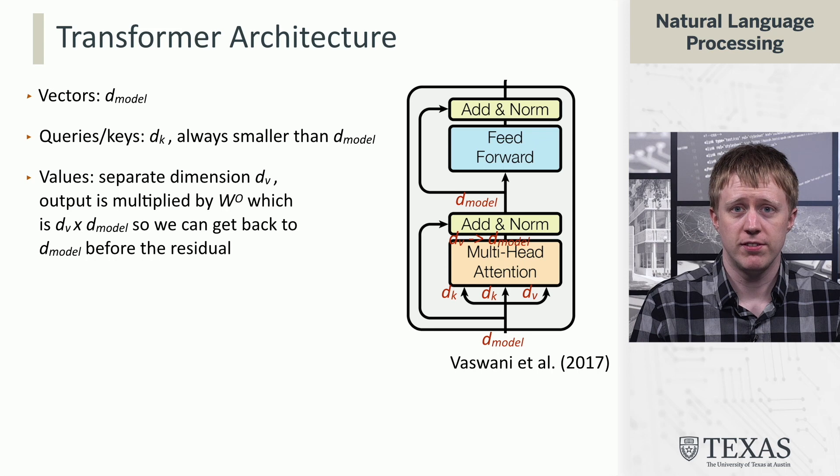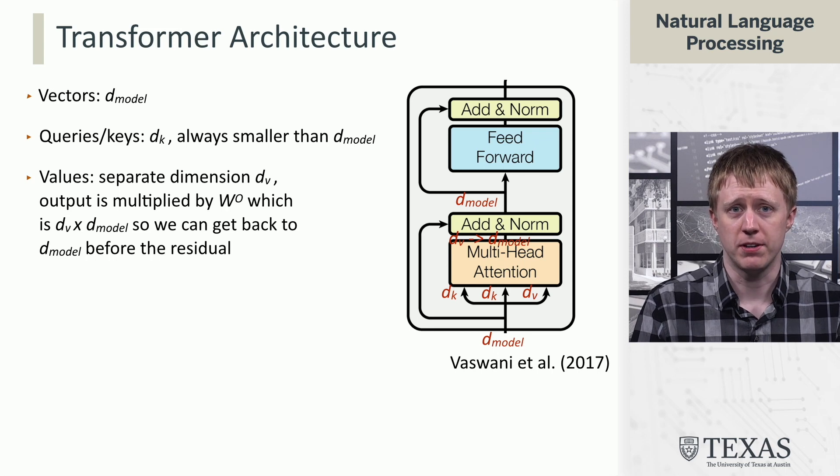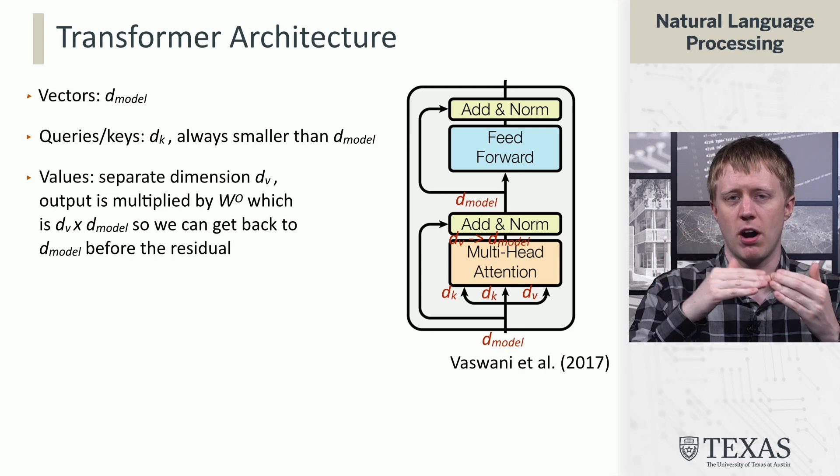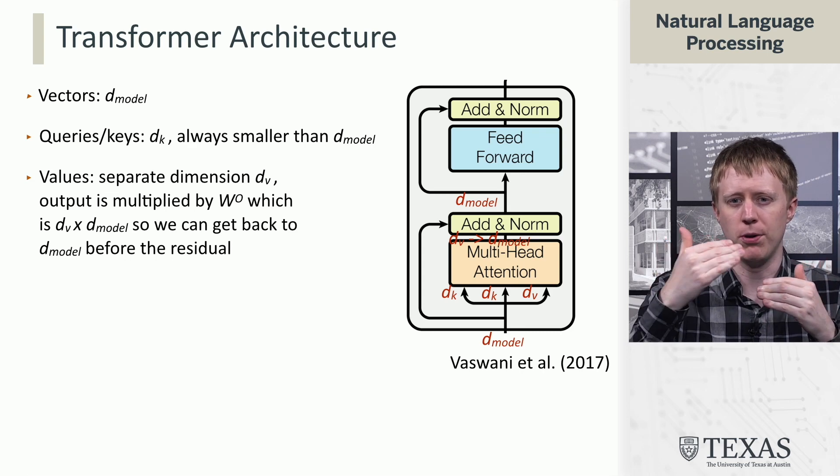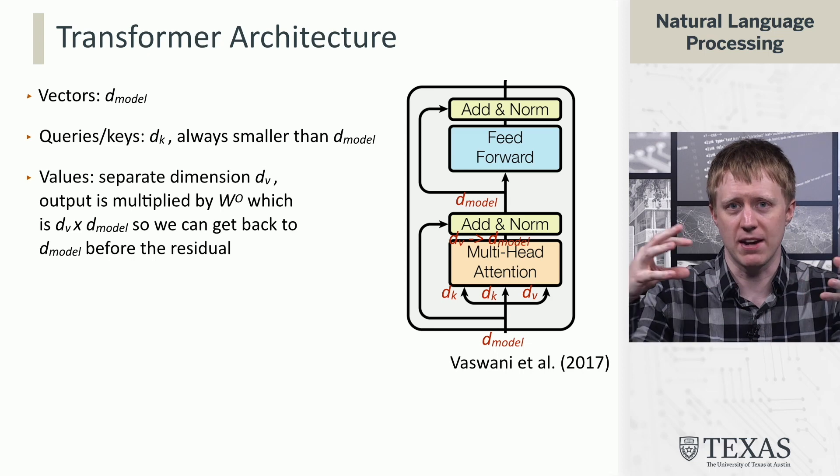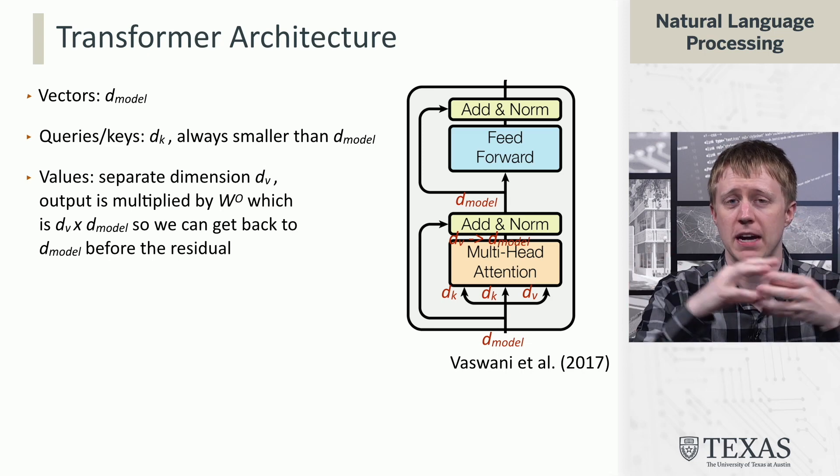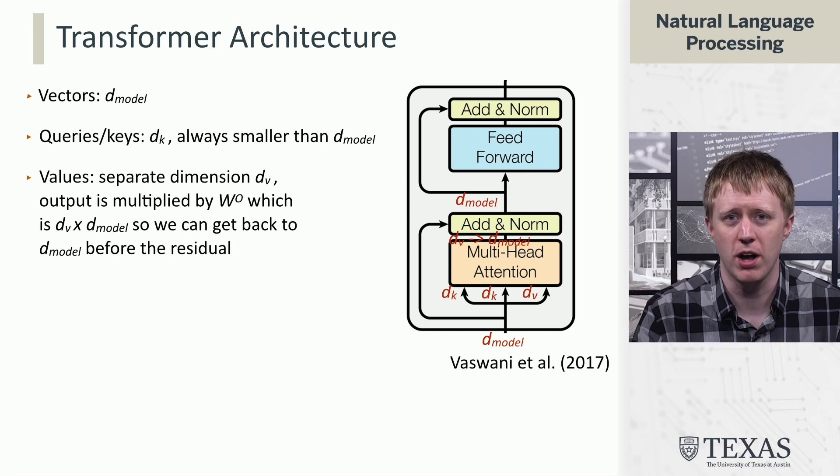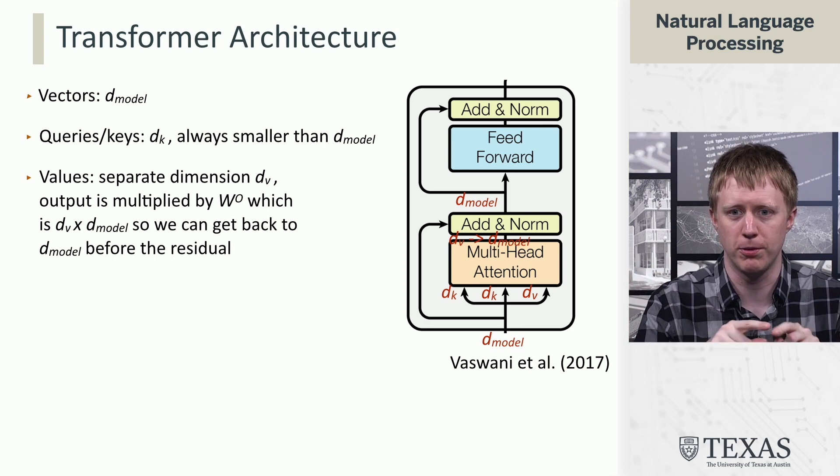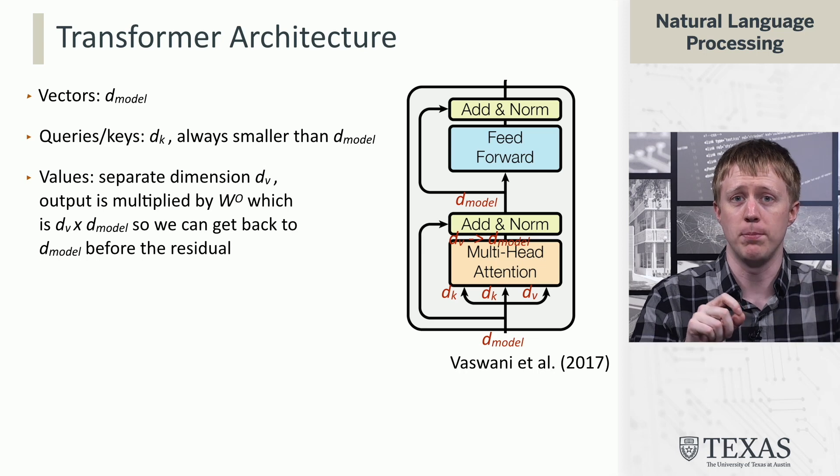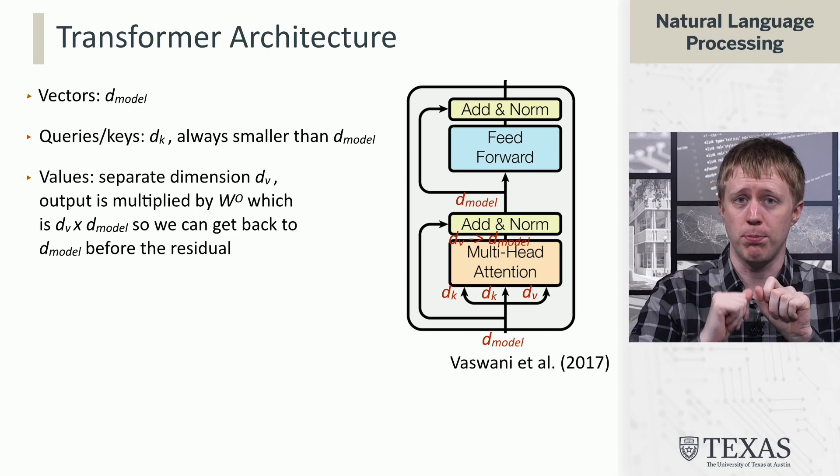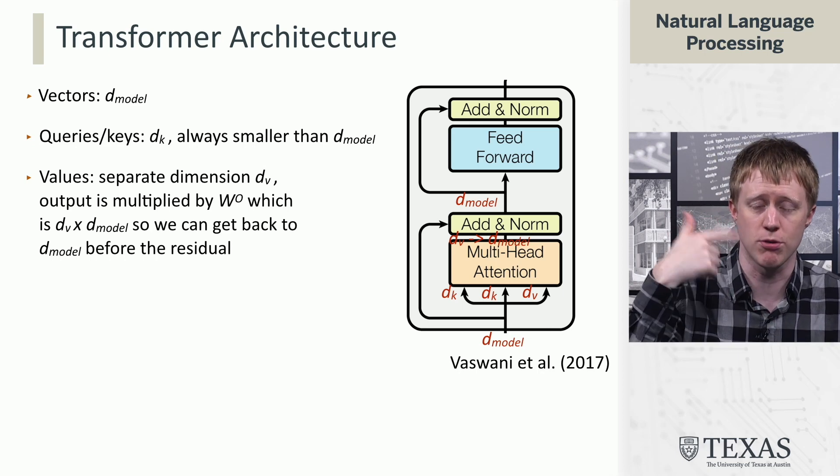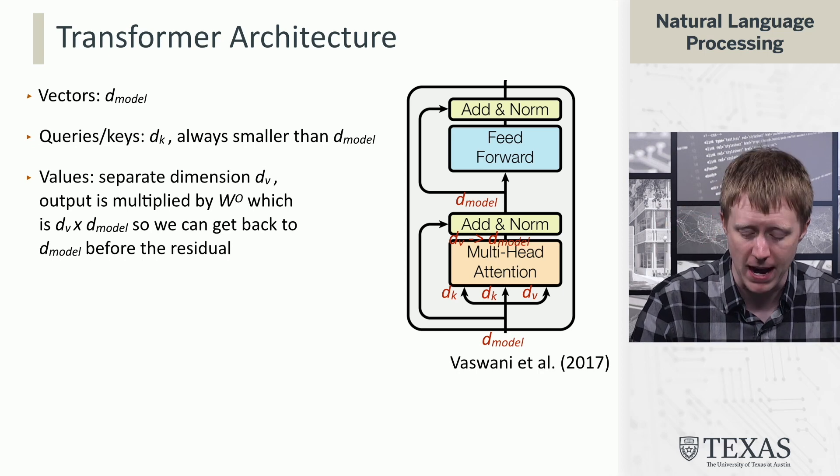The values, DV, also have a separate dimension. Remember that when we get to the output of this layer, we are going to multiply by another output matrix to basically make everything the right size again and then to combine things across the multiple heads. So we can make these whatever size they want and they'll eventually get back to D model before this residual layer. However, because of the residual layer, we're going to add the input to the output. So, the output has to be the same size as the input here. So, once we get through all the multi-head attention, we need to get back to D model.